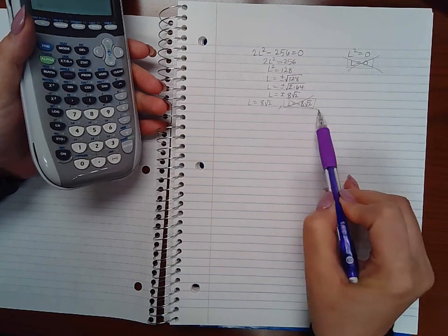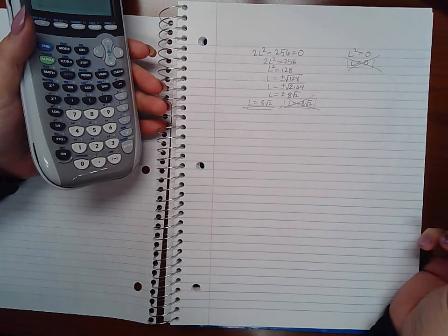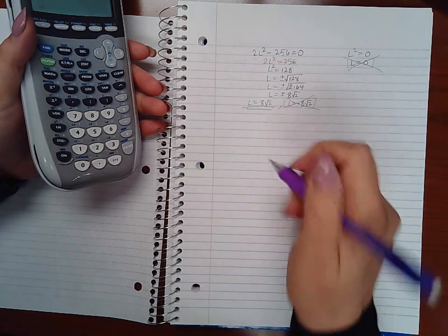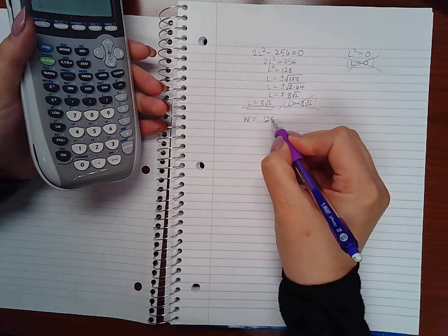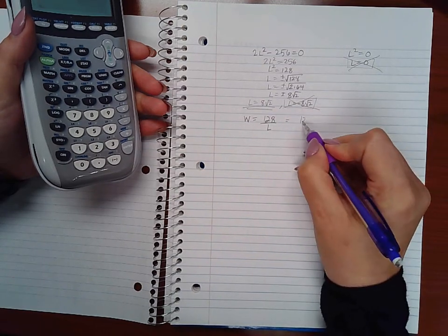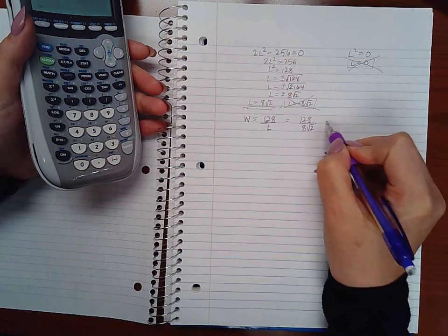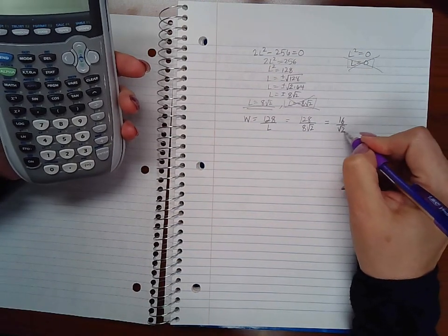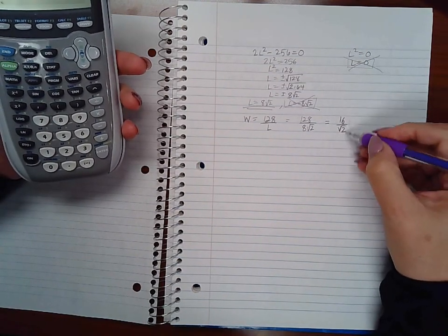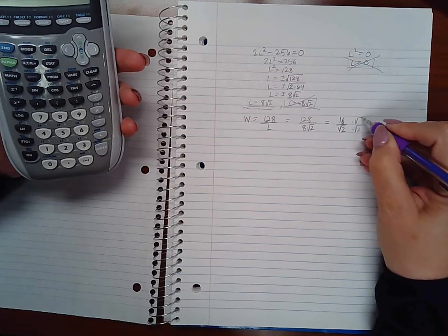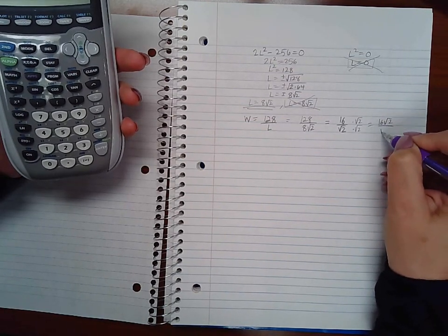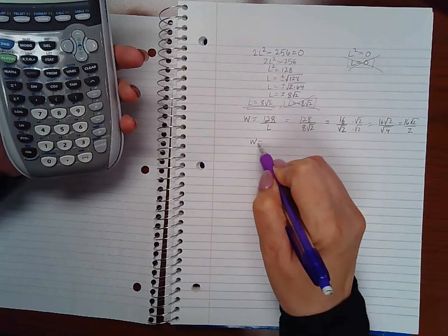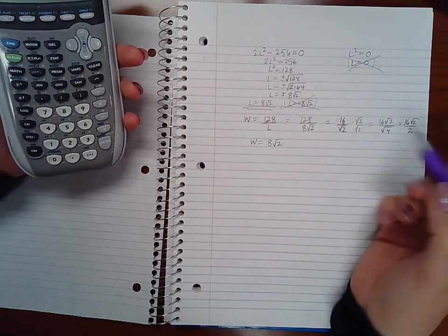The only feasible answer I have is L equal to 8 square root of 2. But if L is equal to 8 square root of 2, the width, if you recall, is 128 over L, which means 128 over 8 square root of 2, or 16 over square root of 2. You cannot use this as an answer. You do have to rationalize your denominator.